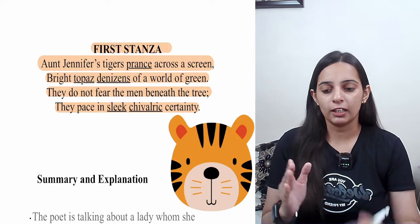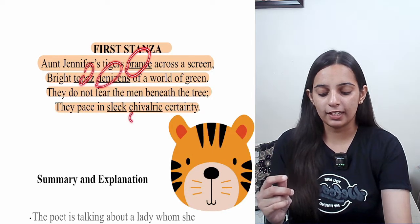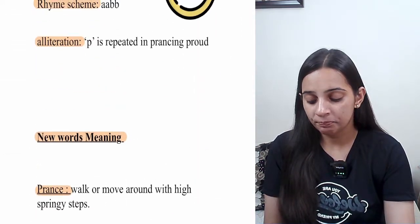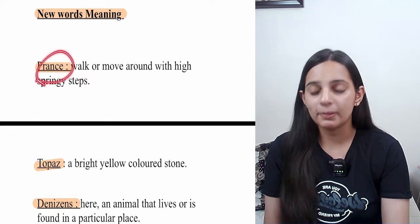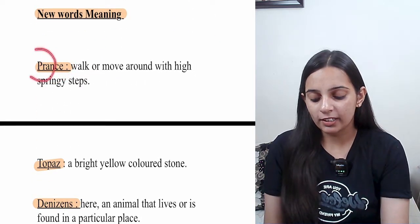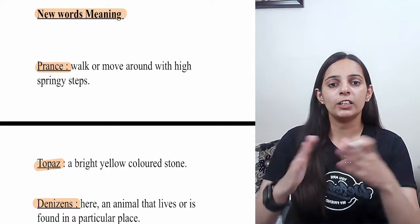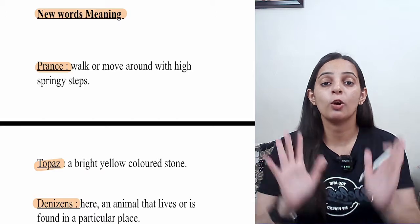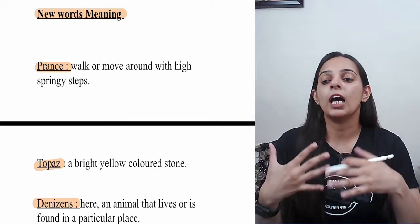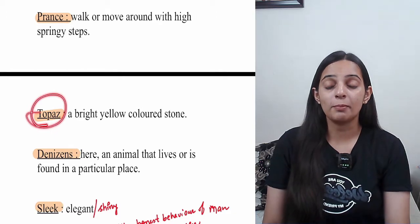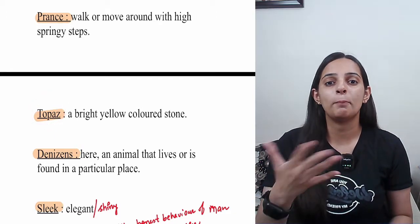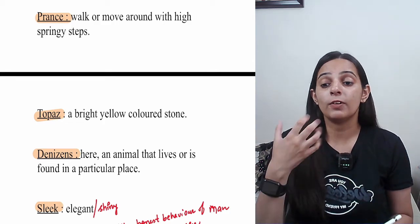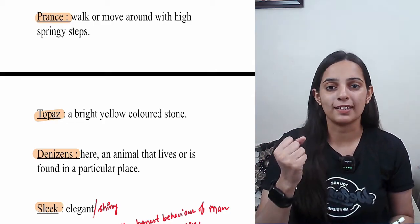Now let's look at the first stanza word meanings. The word 'prance' means to walk or move with high spring steps, like bouncing steps. 'Topaz' means a yellow-colored stone, or bright yellow-colored stone — we call it topaz. 'Denizens' means inhabitants or residents.